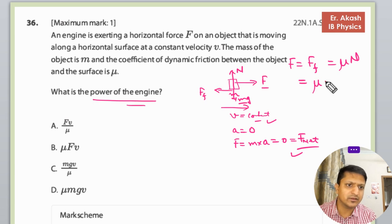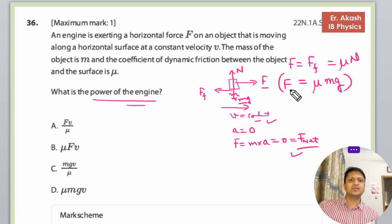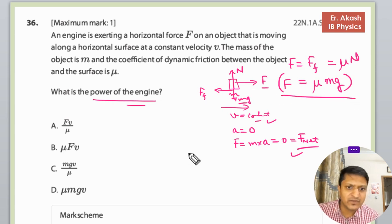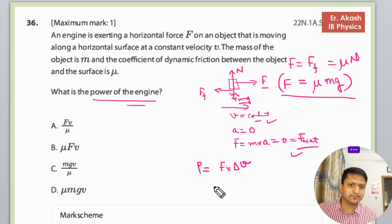So μmg is the force applied on the object by the engine. We know that power equals force times velocity. So the power is μmg times v.